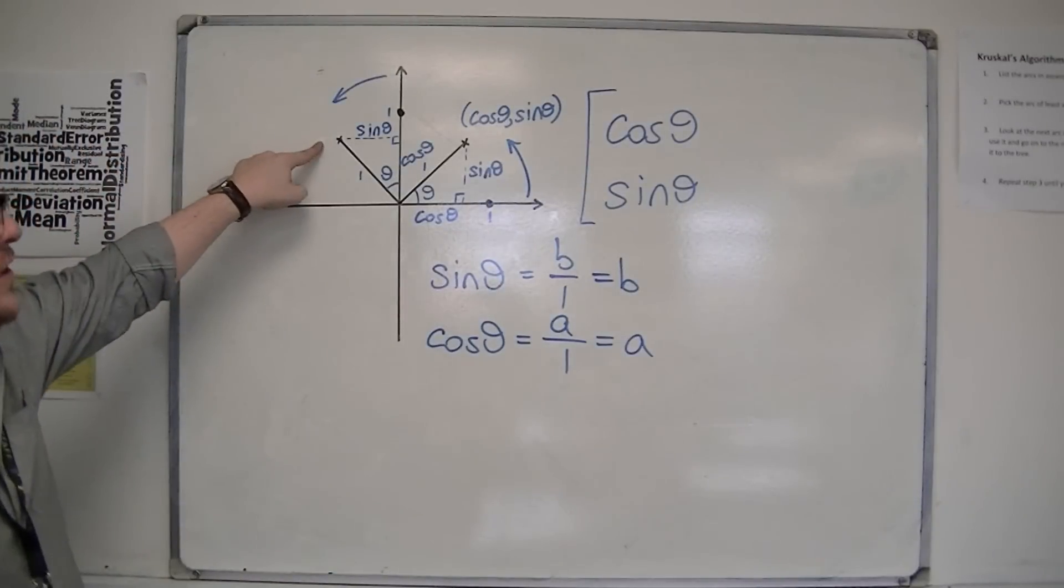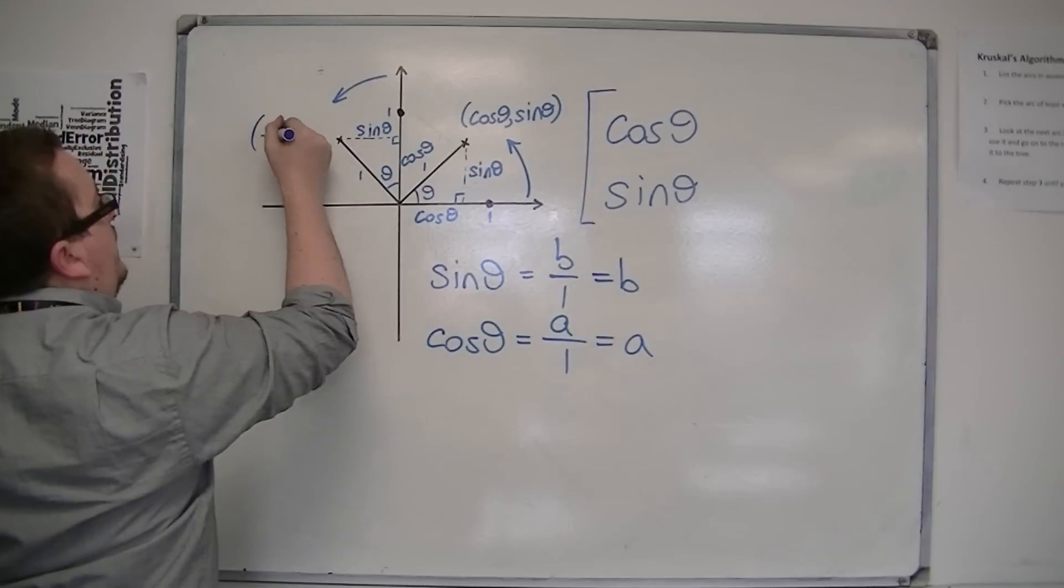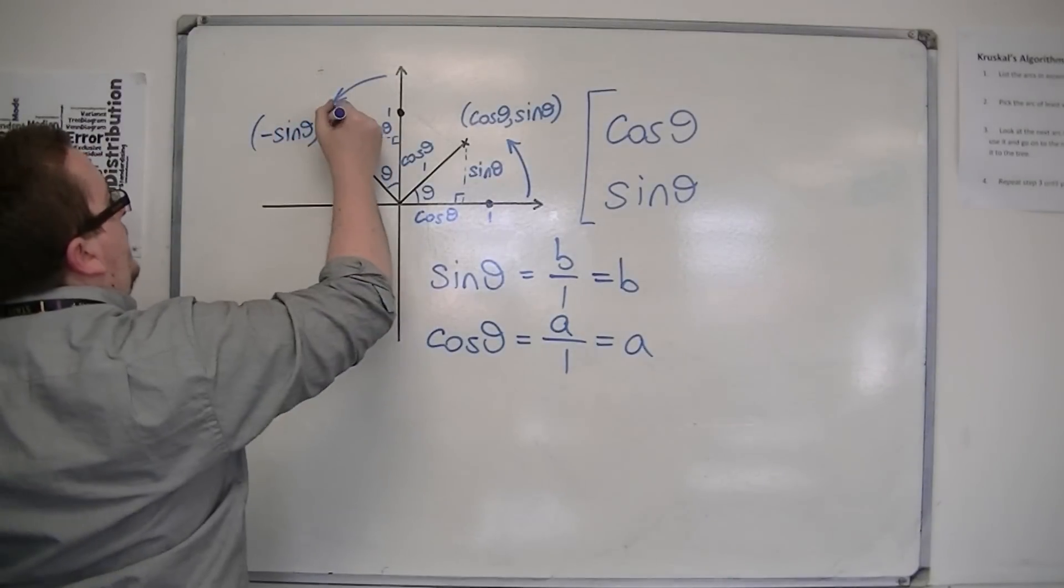And so if I was finding the coordinates at this point, then it would be minus sine theta along and cos theta high.